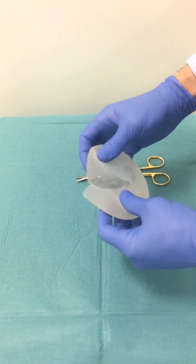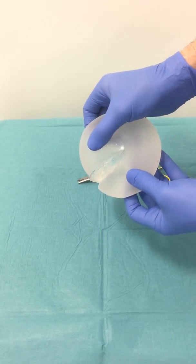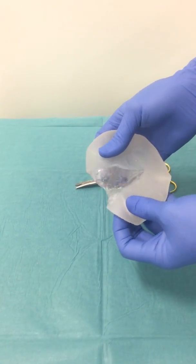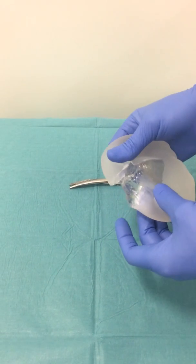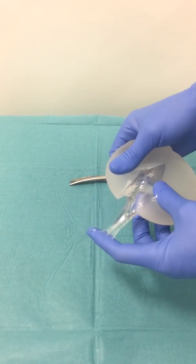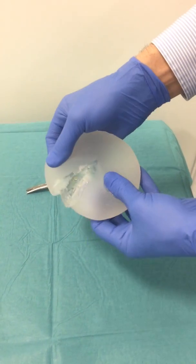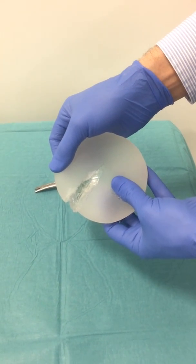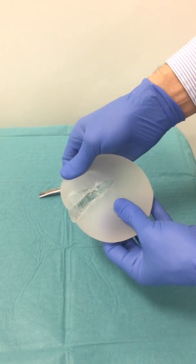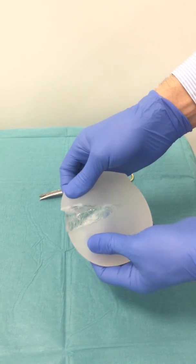So you can see it's not a liquid inside. This is what they call cohesive gel. It doesn't run out. There's a bit of tackiness to it. So if ever the implant ruptures it doesn't run out, it stays in that form and maintains its shape.